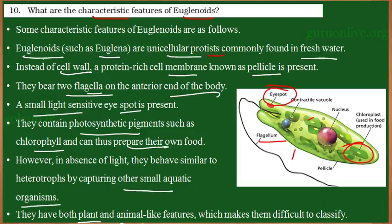It becomes difficult to classify this organism under either the plant kingdom or animal kingdom, so they were grouped under the kingdom Protista. These are the characteristic features of euglenoids: they are unicellular, eukaryotic organisms with photosynthetic pigments, they have flagella for movement, and if light is not available, they can switch to a heterotrophic mode of nutrition.